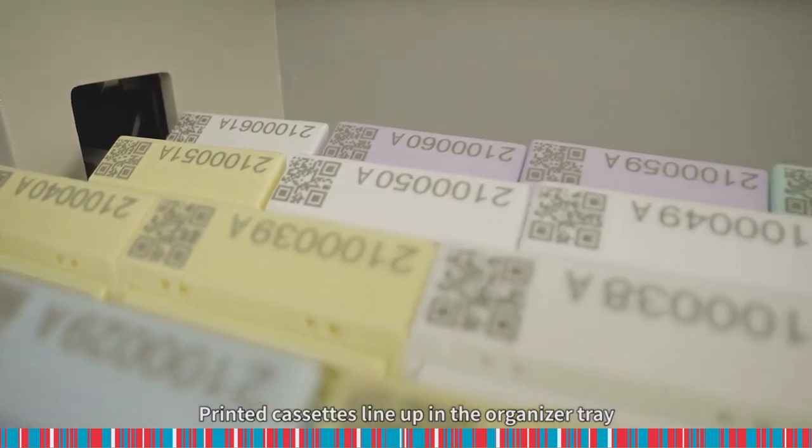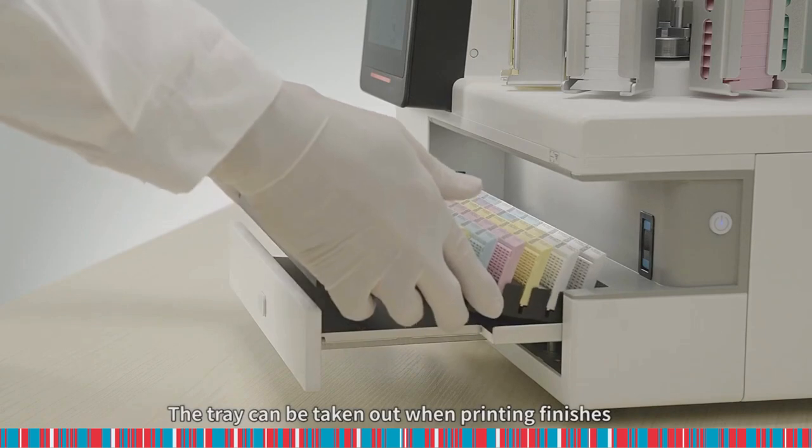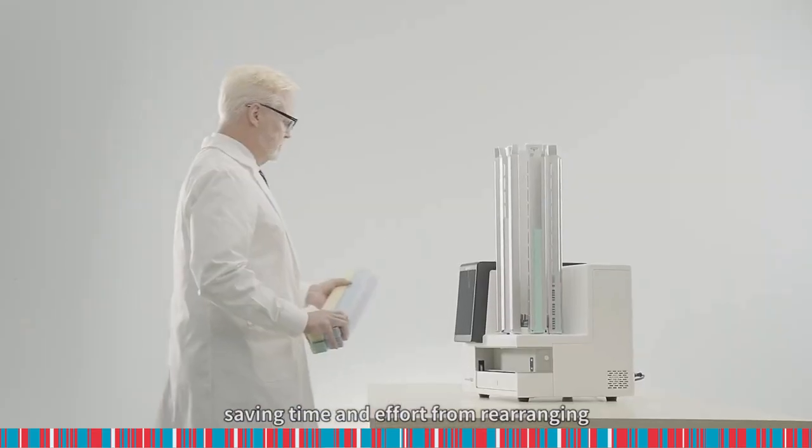Printed cassettes line up in the organizer tray. The tray can be taken out when printing finishes, saving time and effort from rearranging.